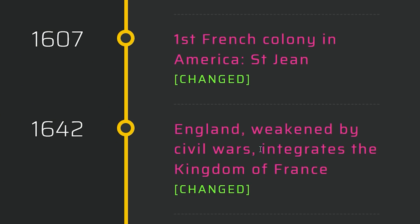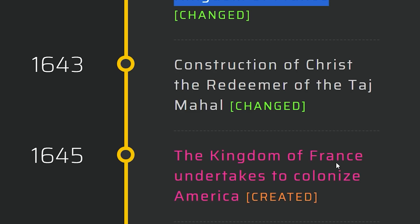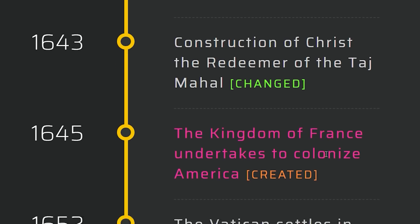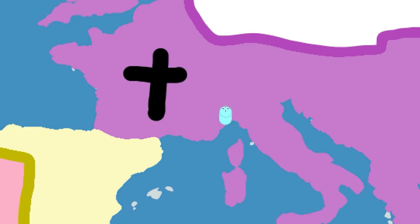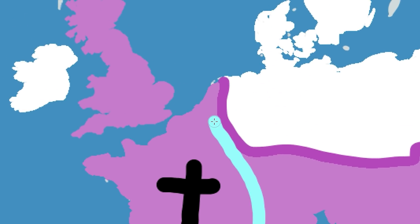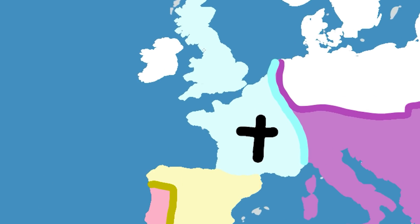England weakened by civil wars integrates into the Kingdom of France. Kingdom of France undertakes the colonizing of America. Now we have the Boston Sausage Party — instead of tea it became chorizo, and now it's sausage. Shouldn't it be baguettes for France? Either way, we can now confirm the existence of a French empire that also controls England.